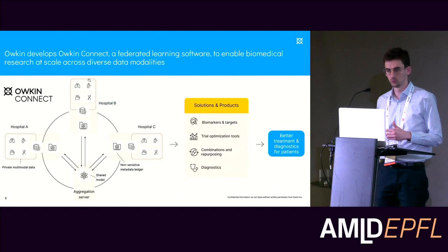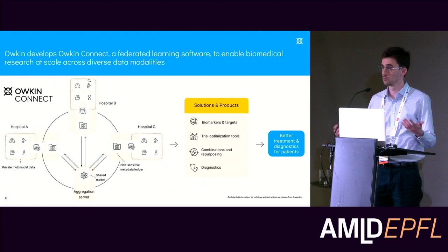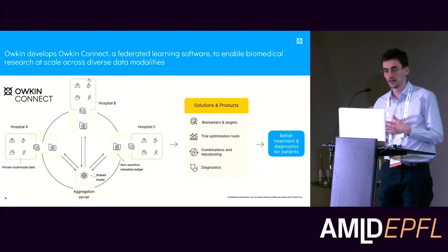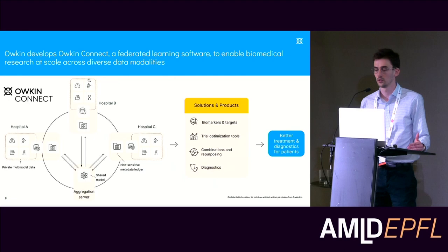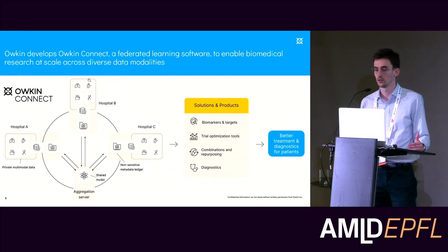This research is translated into a software called Hawkin Connect — a federated learning software deployed in different hospitals, each containing rich multimodal data such as genomic data or histopathology data. This allows Hawkin to build a platform of federated datasets used to build solutions and products such as clinical trial optimization tools or diagnostic tools, to help build better treatments and diagnostics for patients.